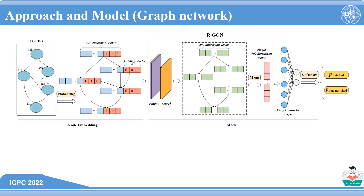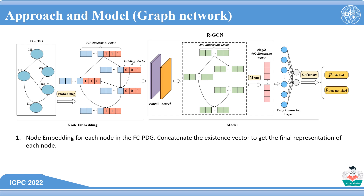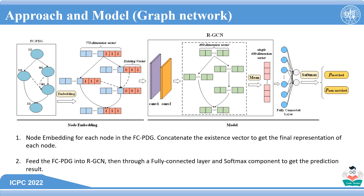Here is the structure of our network. We first use CodeBERT to generate embeddings for each node in the FCPDG. Along with the three-dimensional existence vector, each node is represented by a 771-dimension vector. Then, we feed the embedding into a relational graph convolution network to get a 400-dimension vector. Finally, a fully connected layer is used to convert the 400-dimension vector to a 2-dimension vector.